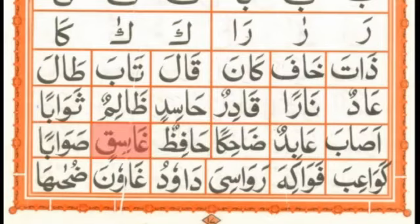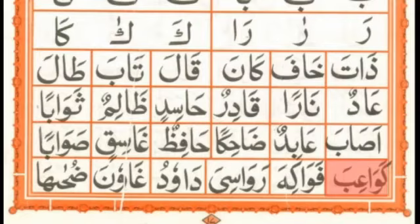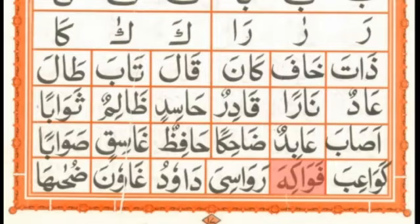غَاسِقًا، غَاسِقًا — غ بھی حروف مستعلیہ میں سے ہے۔ صَوَابًا، كَوَاعِبًا، فَوَاقِیَہ۔ اب دیکھیں — جب میں پڑھ رہی ہوں تو آپ اس پر غور کریں کہ جو زبر، زیر اور پیش ہے میں انہیں نہیں کھینچ رہی، صرف اس زبر کو کھینچ رہی ہوں جس کے ساتھ خالی الف موجود ہے۔ بہت دھیان سے پڑھنا ہوتا ہے اس میں — ایک دفعہ جب آپ لوگوں کو سمجھ آ جائے گی تو عادت ہو جائے گی اور انشاءاللہ بہت اچھا پڑھیں گے۔